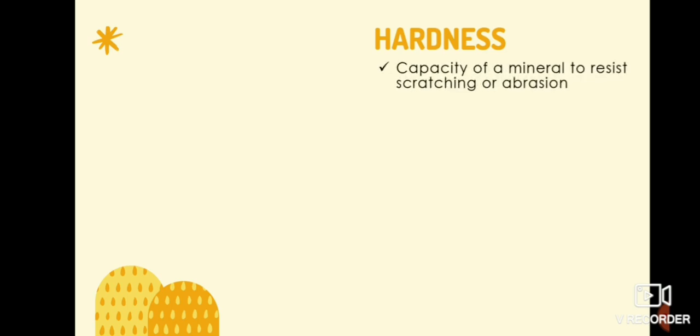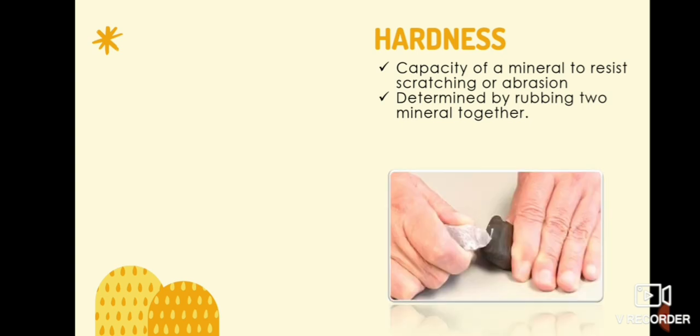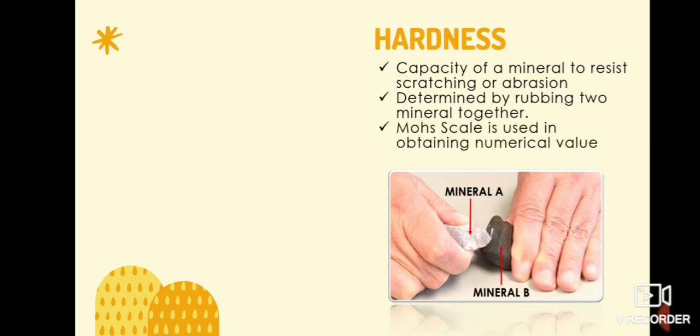Hardness is the capacity of a mineral to resist a scratching or abrasion. By rubbing mineral against each other and vice versa, we can determine the hardness. For example, we rub mineral A with mineral B. Mineral B was able to resist deformation. Therefore, mineral B is harder than mineral A.